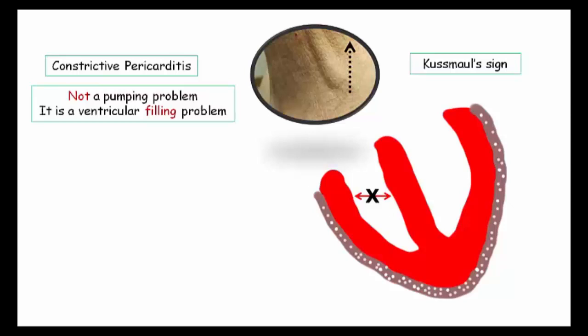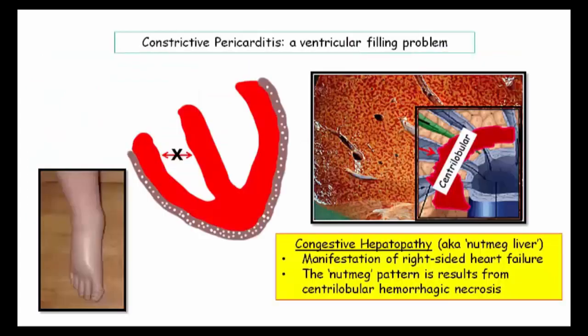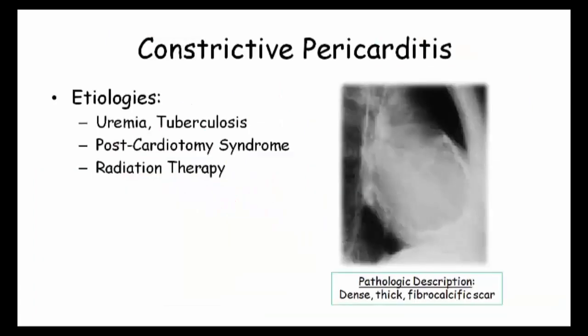Constrictive pericarditis is not a pumping problem — it is a ventricular filling problem. If you can't fill the ventricle and blood is backing up into the jugular vein, where else might it manifest? There will be peripheral edema on a hydrostatic basis, but Step 1 seems to love constrictive pericarditis as a disease prototype associated with congestive hepatopathy. Nutmeg liver is generally described as a manifestation of right-sided heart failure. Be familiar with the pathologic description of zone 3 central lobular hemorrhagic necrosis.